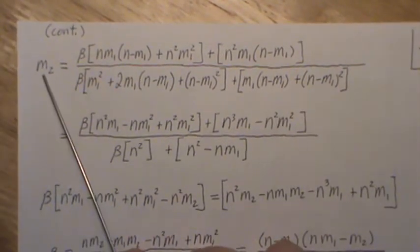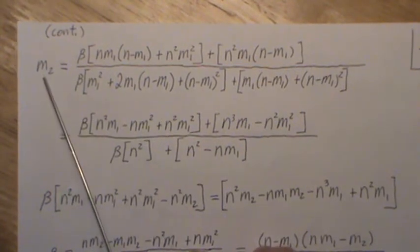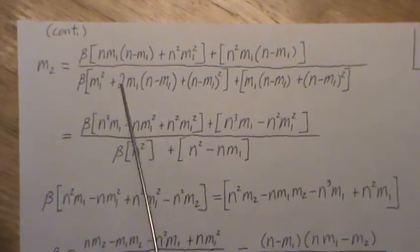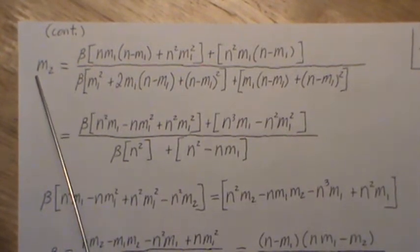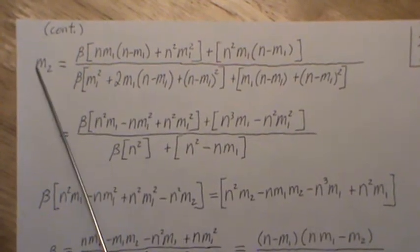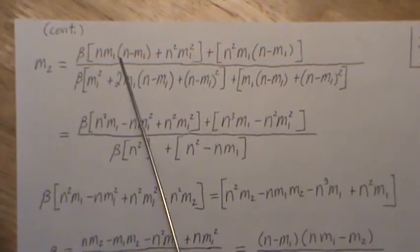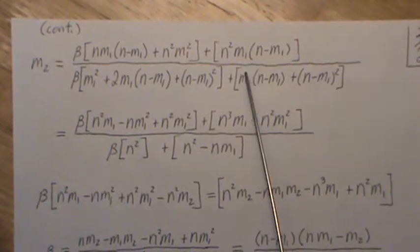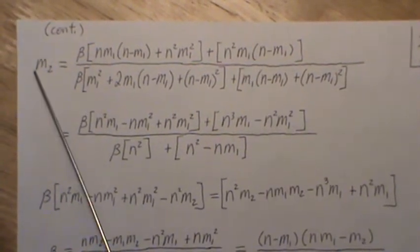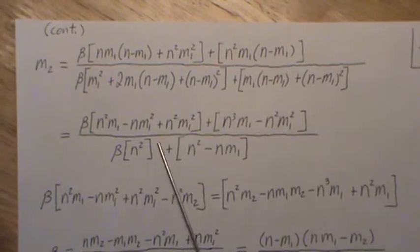And here we factored out a beta, and then here's the terms without a beta. Now, remember, we set this population moment to m2. So what we're going to do is multiply this up, and then the beta terms times that, we're going to subtract over to this side and combine with these. And then this times that is going to stay over here, and we're going to subtract that over. So that's what this step represents.